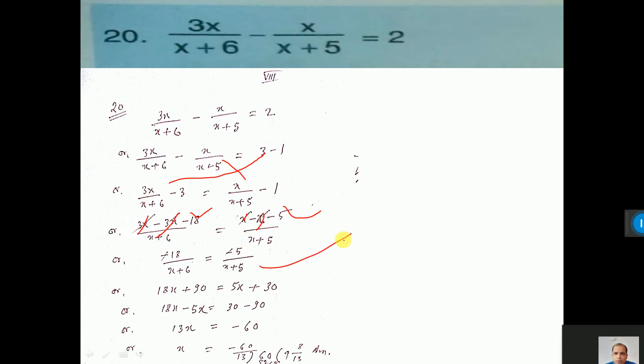Then do cross multiplication. 18x plus 90 equal to 5x plus 30. So 5x will come left side. It will be minus. So 13x. And 30 minus 90, that is 60. Then 13 will go that side. Then 60 by 13. It will be 4 whole 8 by 13.